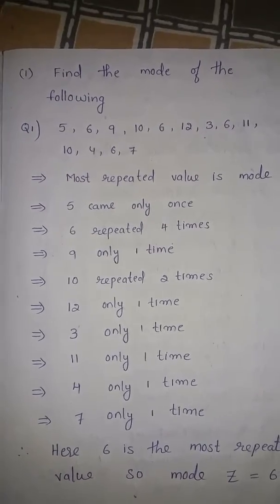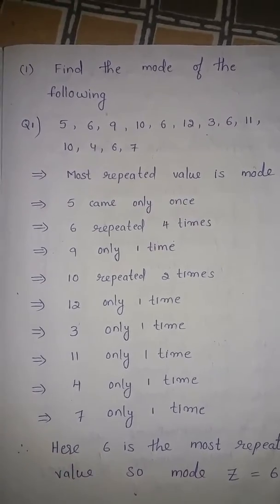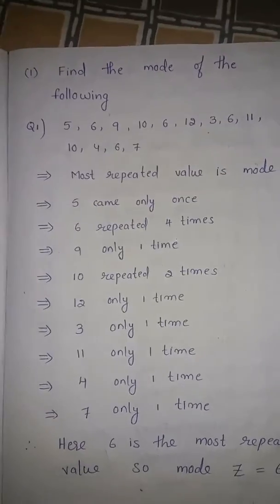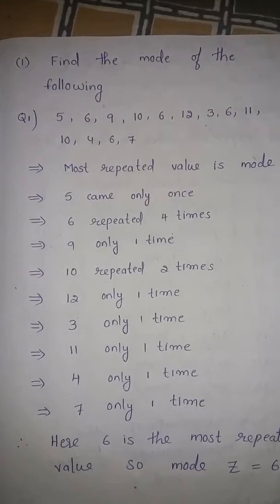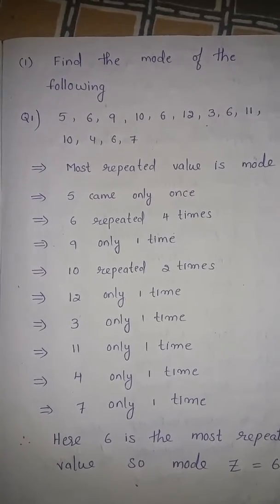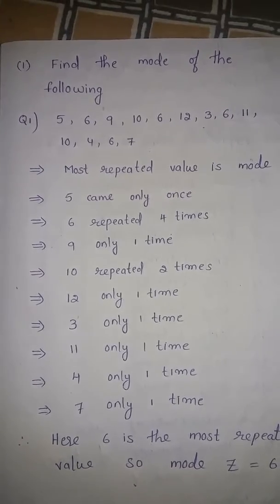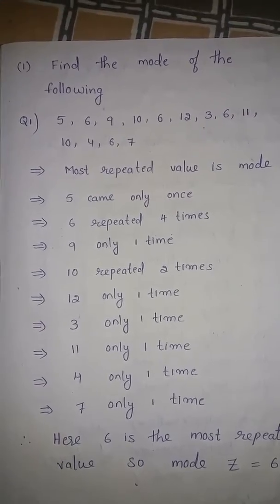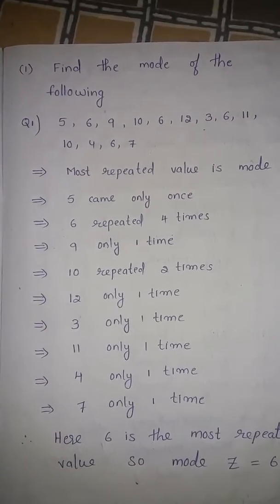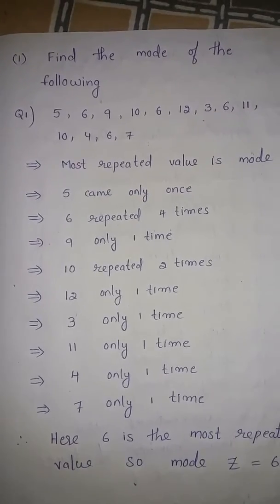Here in the given observations, 5 came only once, 6 is repeated 4 times, 9 is only one time, 10 is repeated 2 times, 12 only one time, 3 also came only one time, 11 came only one time in the data, 4 came only one time in the data.